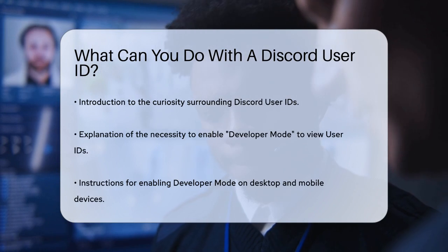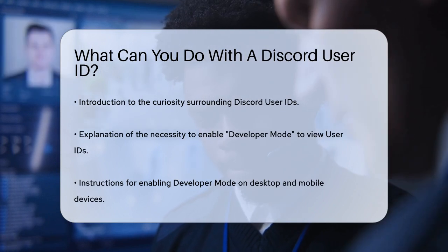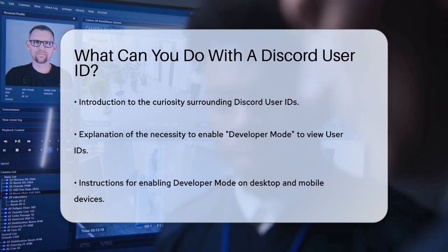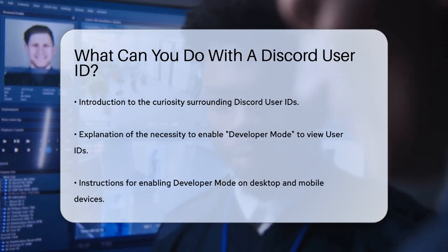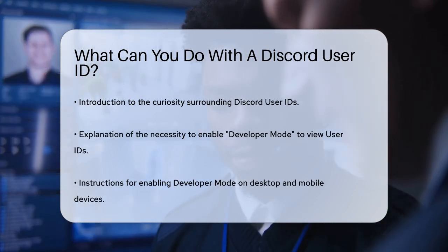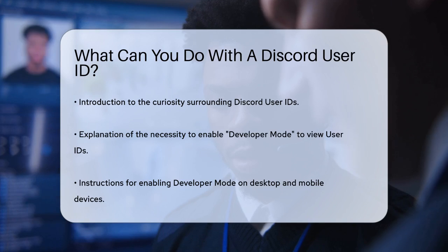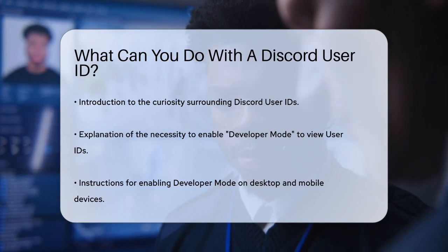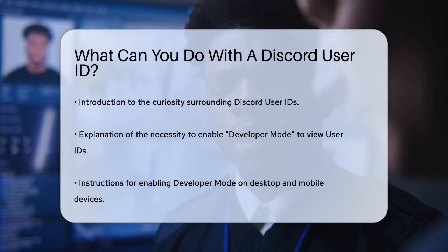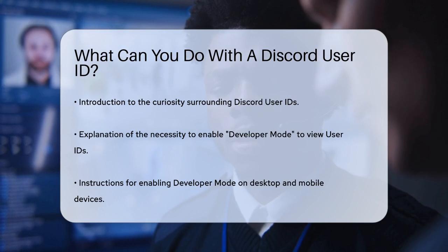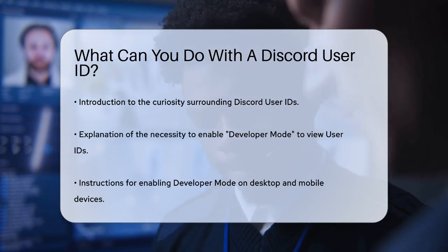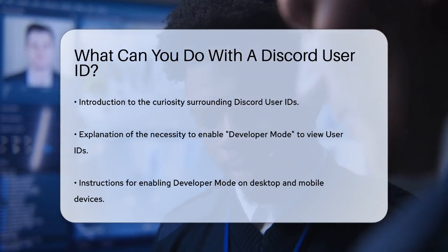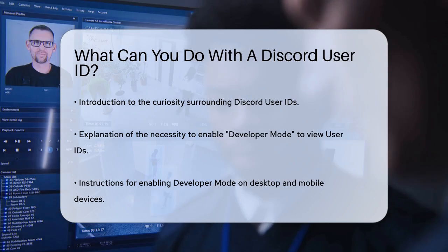First, to even see these IDs, you need to enable Discord's Developer Mode. This mode reveals some of the app's extra features, including the IDs. On the desktop or website, you do this by clicking the gear icon in the bottom left corner, selecting Advanced, and then toggling on Developer Mode.